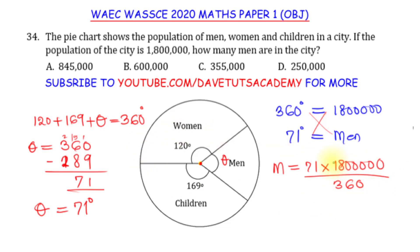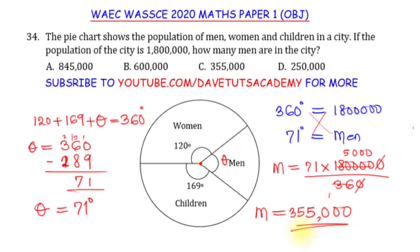You could have said you want to calculate it as a ratio of the total, but it's actually going to amount to this eventually. So 36 divides into 1,800,000 giving 5,000. Then 71 times 5,000: 1 times 5 is 5, and 5 times 7 is 35 — that gives us 355,000. Looking at the options, option C amounts to 355,000. By first getting the angle corresponding to men and relating it as a ratio to the total angle, we get the number of men in the city as 355,000.